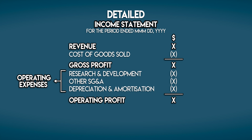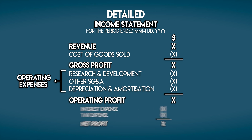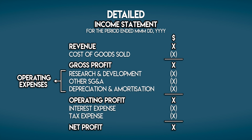Then we remove all of the operating expenses like research and development, selling, general and administrative expenses, and depreciation and amortization, which leaves us with operating profit. Then at the bottom, we take away interest and tax to reach net profit, also known as the bottom line.